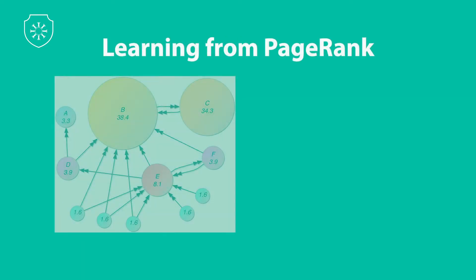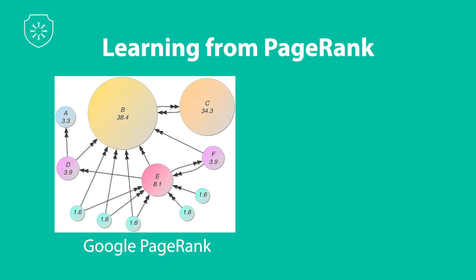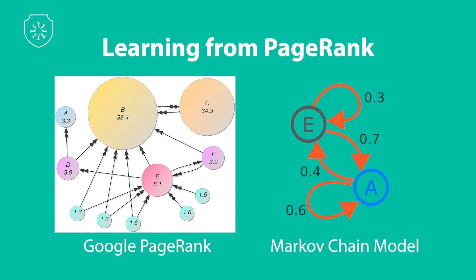Google's PageRank algorithm ranks web pages based partly on their interactions with other popular web pages. We've taken that idea and applied it to epidemiology. You can determine the likelihood of whether a person has been exposed to novel coronavirus by using geolocation data to analyze their interactions with confirmed and potential vectors. We can mimic PageRank methodology in epidemiology with Markov chain modeling.